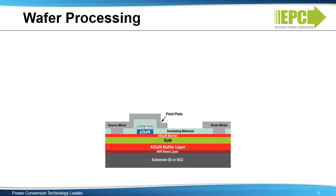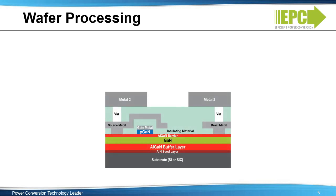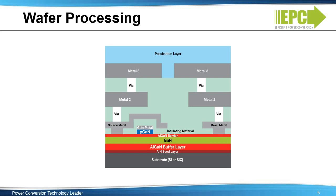You can then deposit a first aluminum metal layer and define the metal pattern. Deposit an inner layer dielectric. Cut vias between metal layers and form tungsten via plugs. Deposit and define a second aluminum metal layer. Lastly, deposit and define a third aluminum layer and deposit final passivation layers.